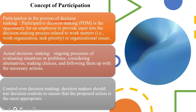When you look into the decision making process, decision makers should use decision controls to ensure that the proposed action is the most appropriate action. This is the entire premise in which decision making and control over decision making runs. If the proposed action is not the most appropriate, unfortunately the decision will not be the best decision. So decision controls support and validate the decision making process.